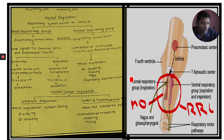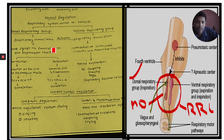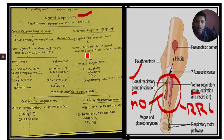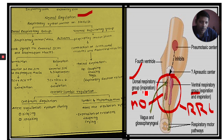The medulla oblongata contains the respiratory rhythm center. In the respiratory rhythm center there is a dorsal respiratory group (DRG) and a ventral respiratory group (VRG). I am giving a flow chart — note this down, as some of these additional points are not in your textbook but help give a better understanding. The dorsal respiratory group consists of an inspiratory center, and the ventral respiratory group consists of an expiratory center.